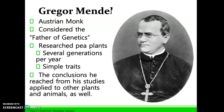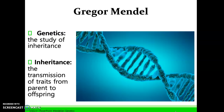Pea plants were a good choice for him because he could get several generations per year and study the traits. He observed traits and was able to make conclusions from his studies that applied to other plants and animals. This helped to develop the laws and principles of inheritance that we still use today.